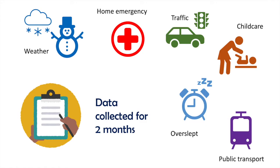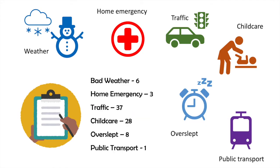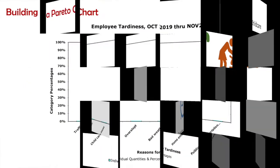You decide to track the specific reasons for employee tardiness for two months. The results are in. Now that we have the data, what can we use to better understand it? A Pareto chart.